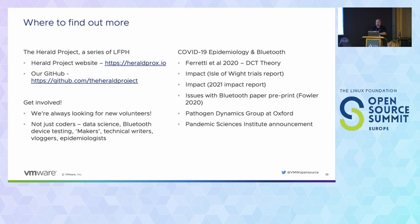To find out more: heraldprox.io or the Herald Project GitHub site, or come chat to me — I'm easily stalkable on the internet. There are also loads of COVID-19 epidemiology papers; all the Oxford ones are open access on the Science website — there was a link earlier in the slides. You can read them to understand how these things work so that people don't fear them. That's the end of my presentation — any questions?